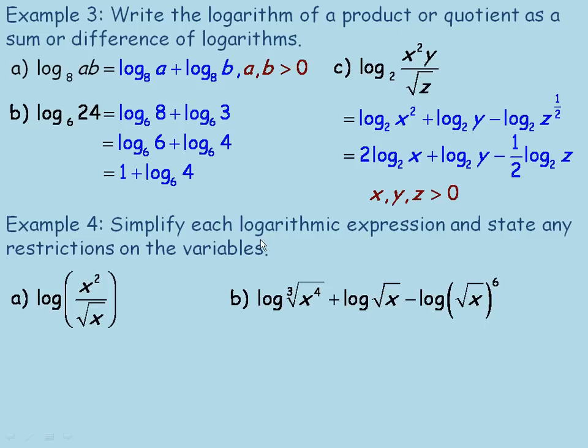In the last example, we're asked to simplify each logarithmic expression and state any restrictions on the variables, like we stated restrictions up here. There's no restrictions for B because it's all numerical. Of course, 8 and 3 and 4 and 6 are not equal to 0 anyway. Now in part A, we're asked to simplify it, so I want to simplify the expression x² over the root of x.